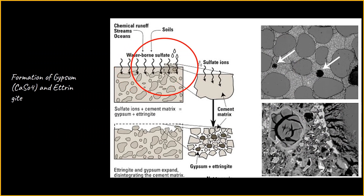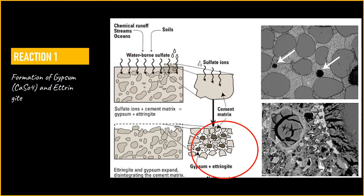There are two possible sulfate attack reactions. The first and more common reaction involves sulfate ions reacting with calcium hydroxide ions as well as with C3A, resulting in the formation of gypsum and expansive ettringite. This reaction occurs under normal temperature and relatively moist conditions. It begins with the dissolution of calcium hydroxide from the cement paste, leading to increased capillary porosity. When sulfate ions come into contact, these hydration products react further to produce expansive compounds that are harmful to the concrete structure.